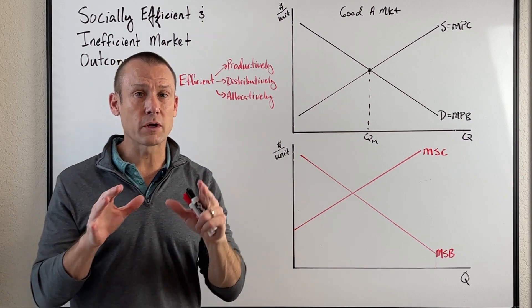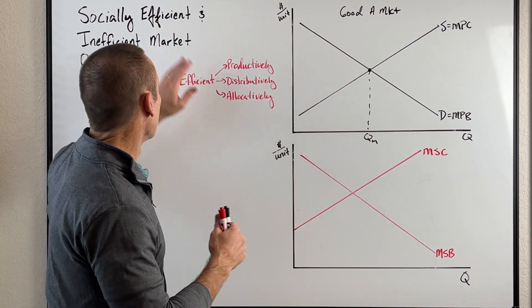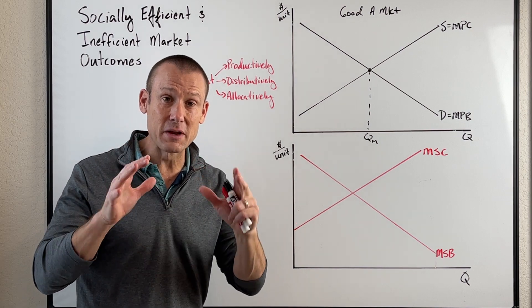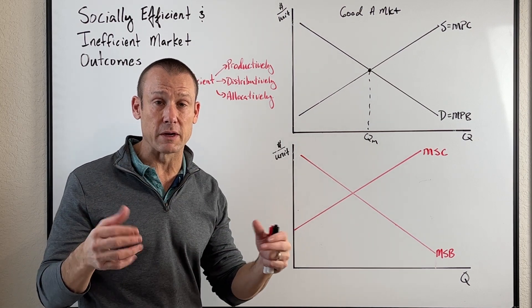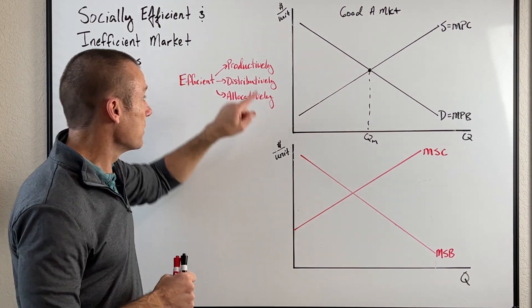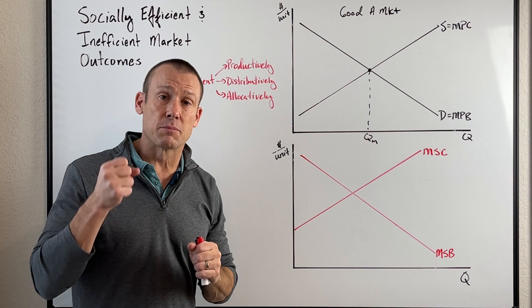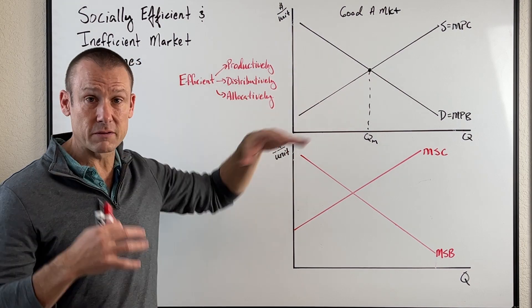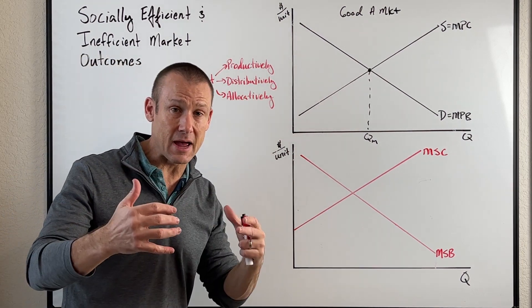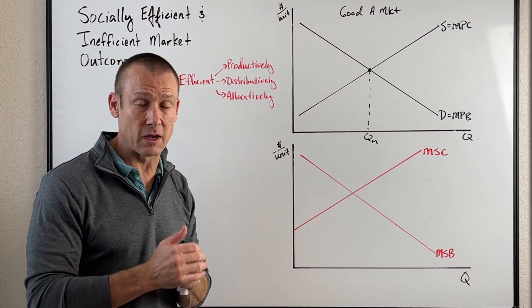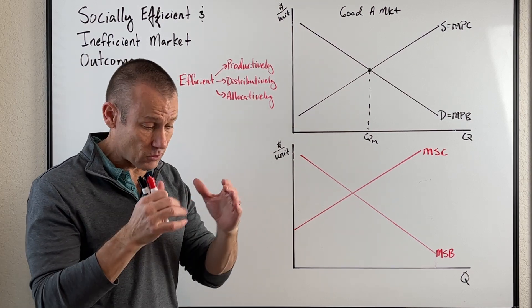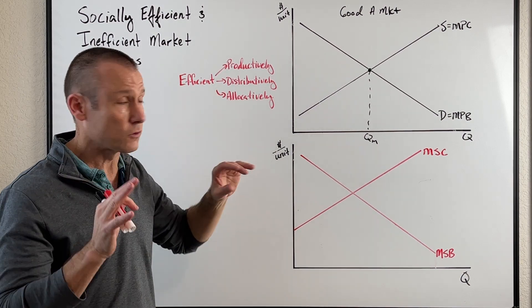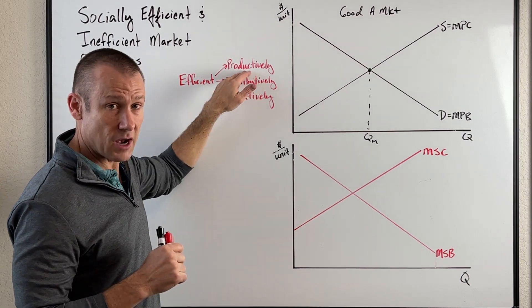Before I go any further, I want to back up about what we even mean by efficiency. Economists are obsessed with efficiencies, and we have three major types that we look at when evaluating different industries or markets. Number one, are we productively efficient? Productively efficient means we're producing at the lowest possible cost. Generally, we think that markets help us achieve that because private actors are subject to profit and loss statements. Revenue minus cost equals profit, so they want to increase revenues and decrease costs. They have a strong incentive to decrease those costs, so market actors do a pretty good job of this.